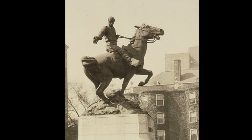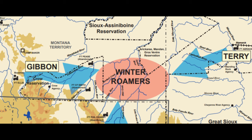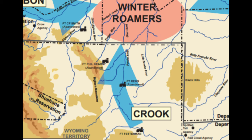General Terry ordered his subordinate commanding the District of Montana, Colonel John Gibbon, to gather his scattered detachments and begin a march from the west. Terry himself would command a column moving from the east. Each of these forces was to follow the Yellowstone River until they united.